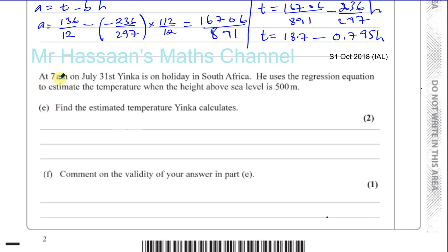Okay, part E. At 7 a.m. on July the 31st, Yinka is on holiday in South Africa. He uses the regression equation to estimate the temperature when the height above sea level is 500 meters. Find the estimated temperature Yinka calculates. So our equation is T equals 18.7 minus 0.795 times H.